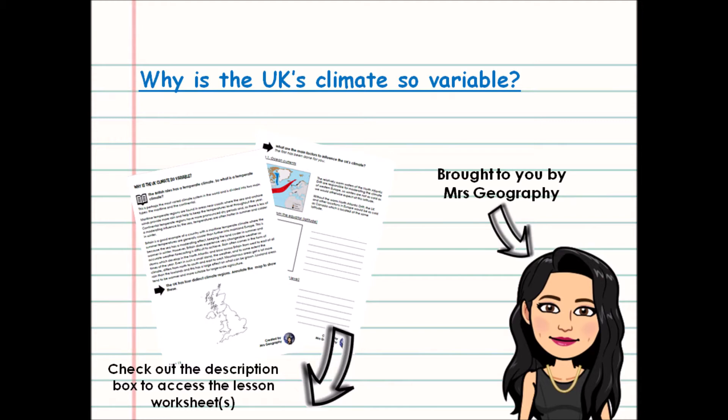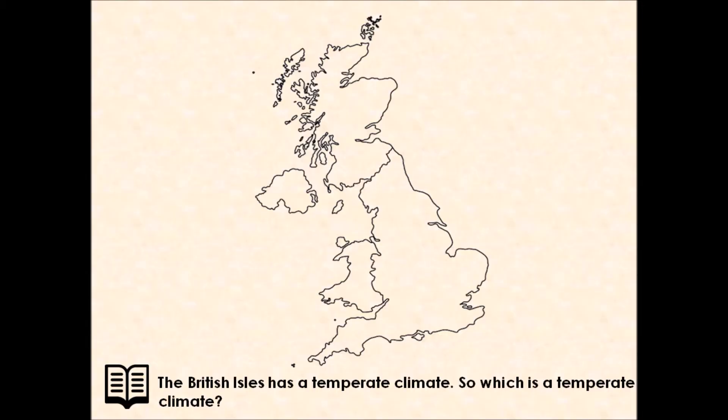Today we're thinking about the UK and our climate — our temperature and precipitation throughout the year. The UK has a climate which is very variable, meaning it changes a lot on a day-to-day basis. The UK can experience quite cool summers as well as mild winters, and our precipitation spreads very evenly throughout the year — we get quite consistent precipitation in the UK.